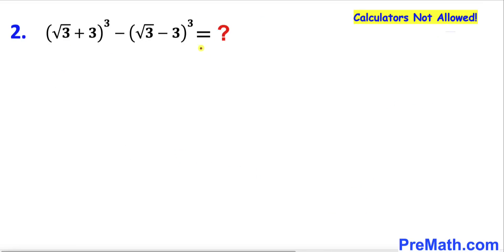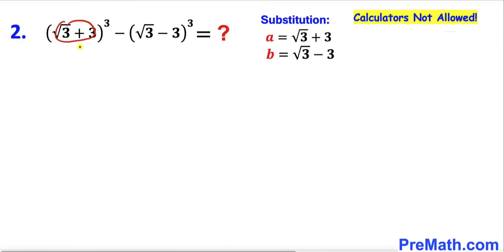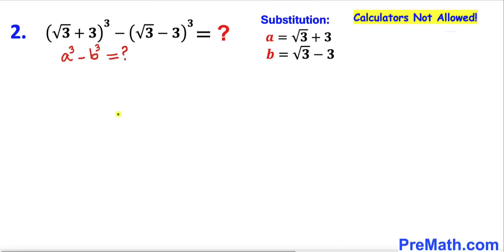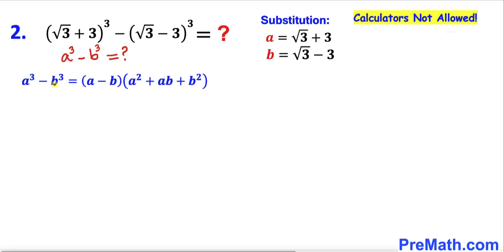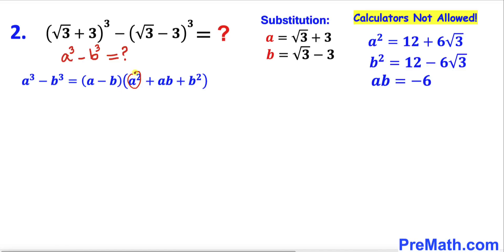Now let's take care of question number 2. Once again I'm going to call the first part 'a' and the second part 'b' as a substitution. We are going to find the value of a cubed minus b cubed, using the identity for a cubed minus b cubed. We already know a squared, ab, and b squared from our previous step, so we just need to calculate a minus b.